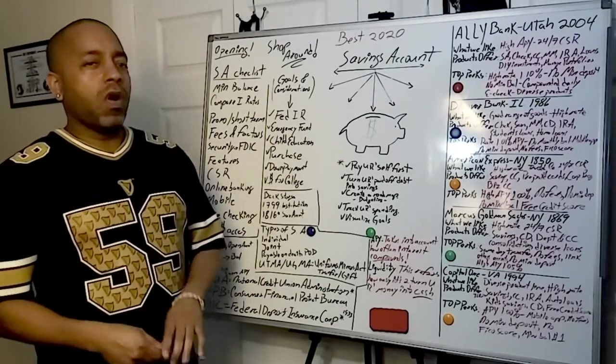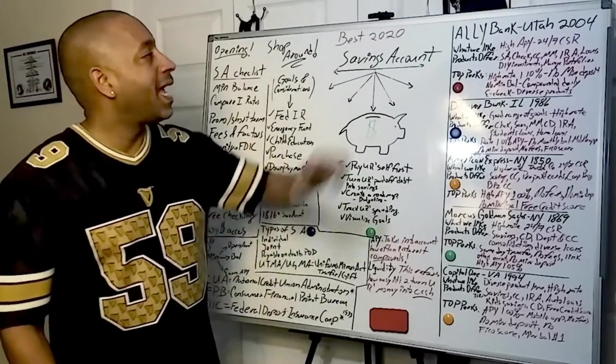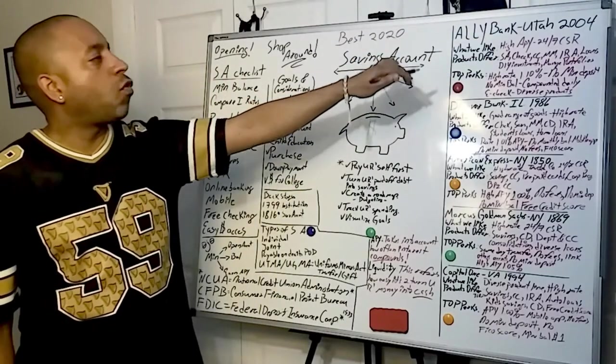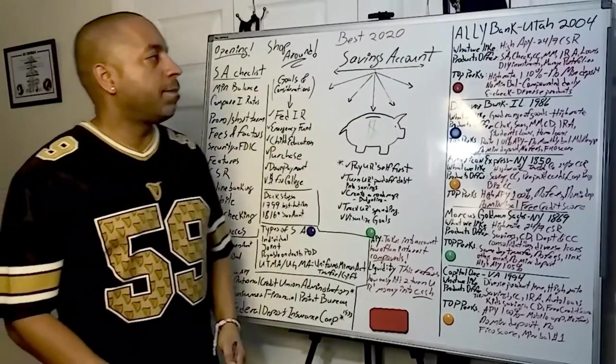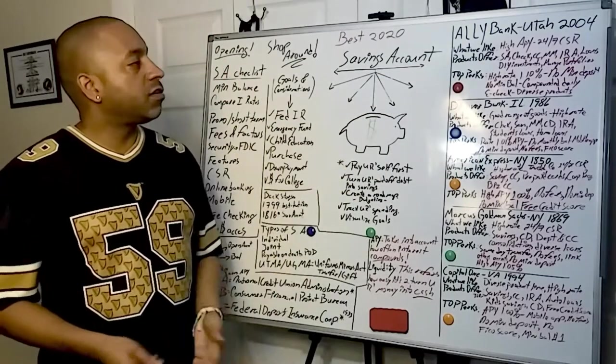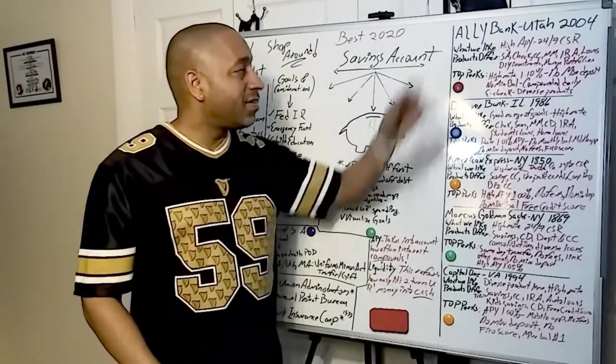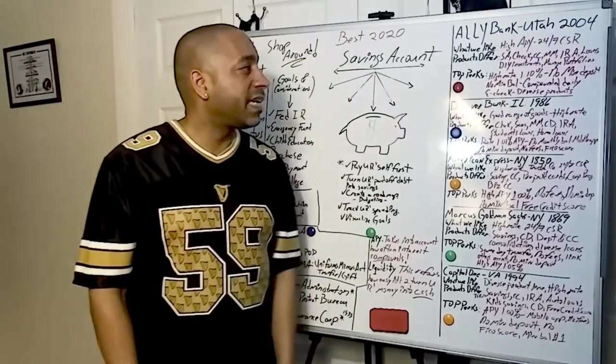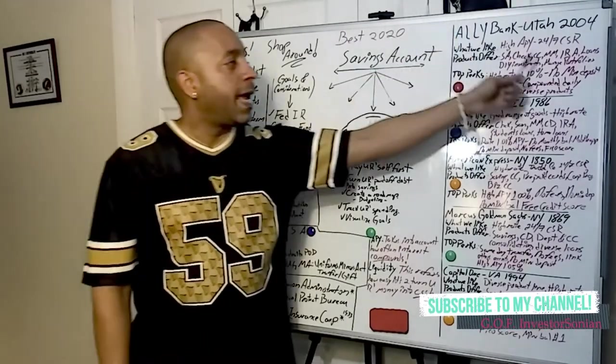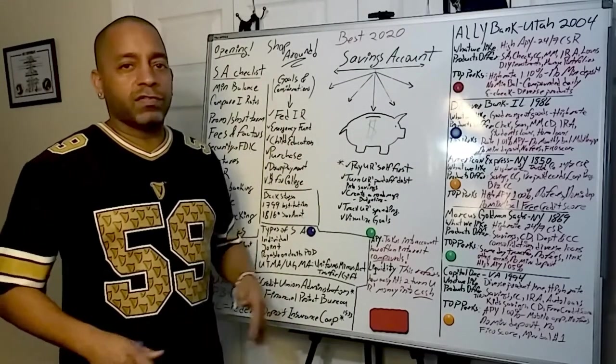This right here, what I'm going to show you. Let's begin with Ally Bank. Headquarters, Utah, established in 2004. What we like about this particular bank? Well, they offer a high APY and they have a 24-7 customer service. Which, you know, what type of products do they offer? It's huge. They have savings accounts, checking, credit cards, money markets, IRA, loans, DIY investments for all the investment lovers, and managed portfolios. So it's huge, guys. This bank has some many, many products to offer.